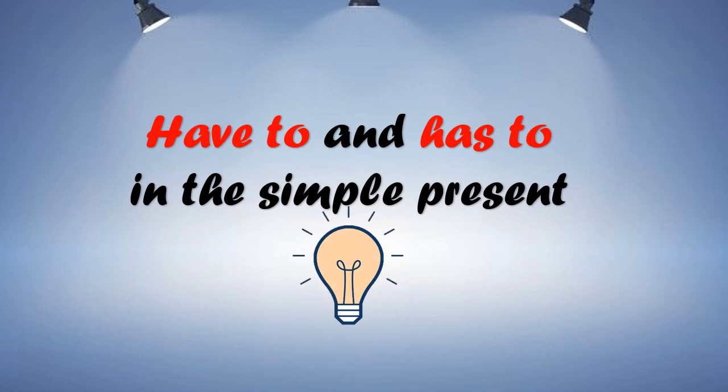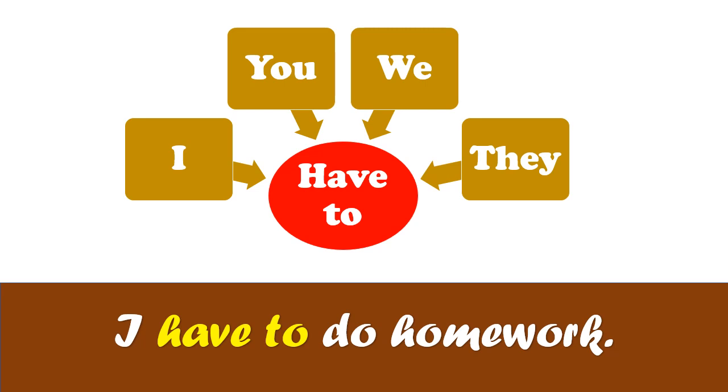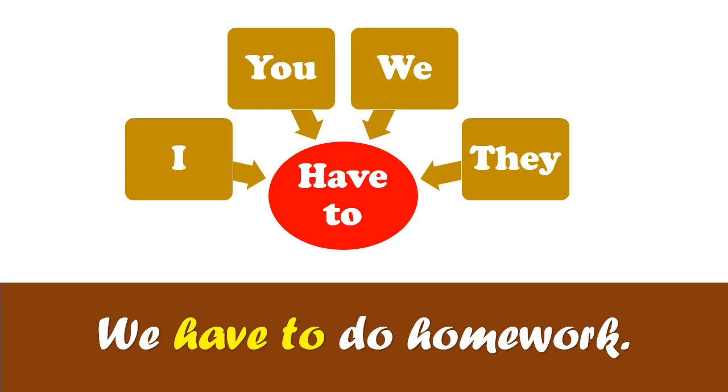Have to and has to in the simple present. Các bạn ơi, bây giờ chúng ta sẽ tìm hiểu kỹ bài hơn nhé. Đầu tiên chúng ta sẽ tìm hiểu kỹ hai động từ này ở thì hiện tại. Have to goes with I, you, we, they. Remember that? I have some examples. I have to do homework. Or, we have to do homework. Các bạn có thể nhìn thấy những đại từ mang chất số nhiều hoặc là đại từ ở ngôi thứ nhất và ngôi thứ hai thì mình sẽ sử dụng cùng với have to.